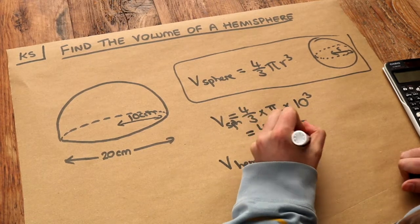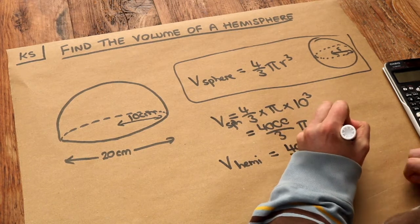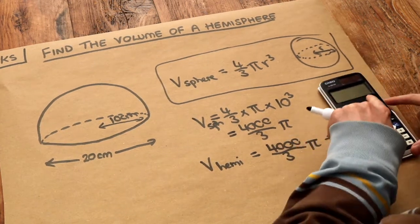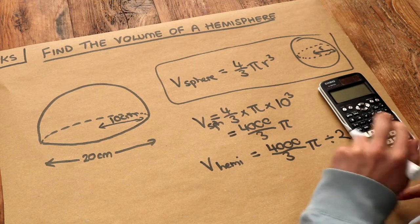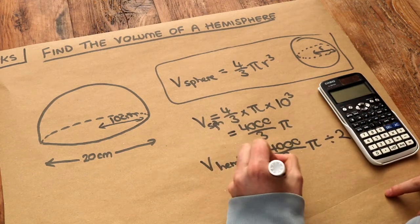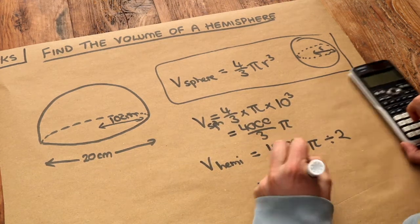So if we do that volume divided by 2 we can just do answer key divided by 2 on our calculator and that gives us 2,000 over 3 pi.